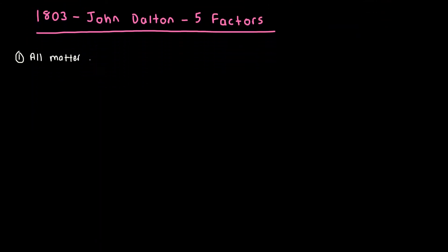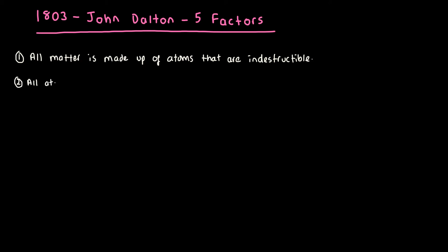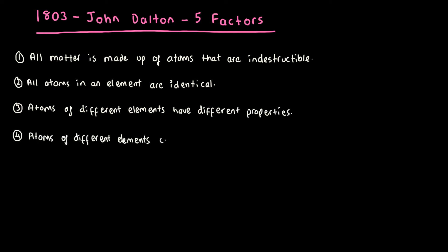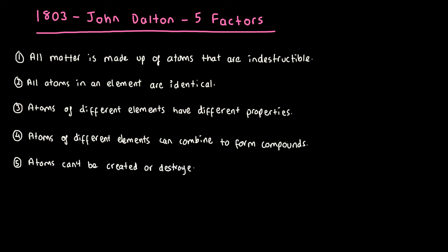All matter is made up of atoms that are indestructible. All atoms in an element are identical. Atoms of different elements have different properties. Atoms of different elements can combine to form compounds. And atoms can't be created or destroyed. And when compounds decompose, the atoms remain unchanged.